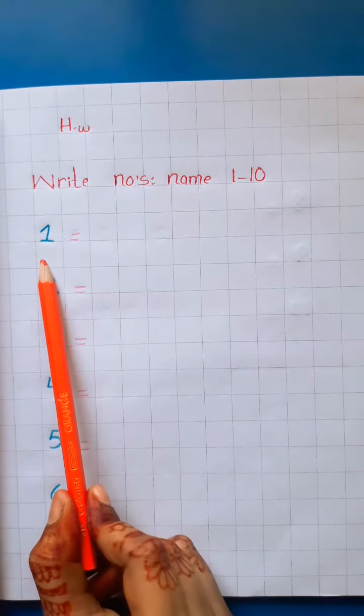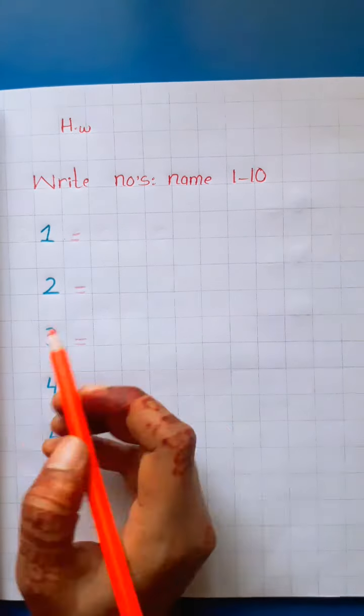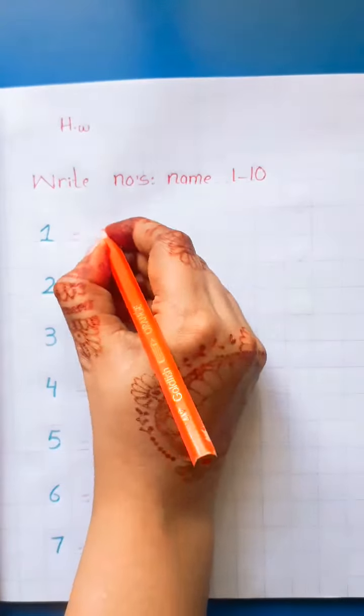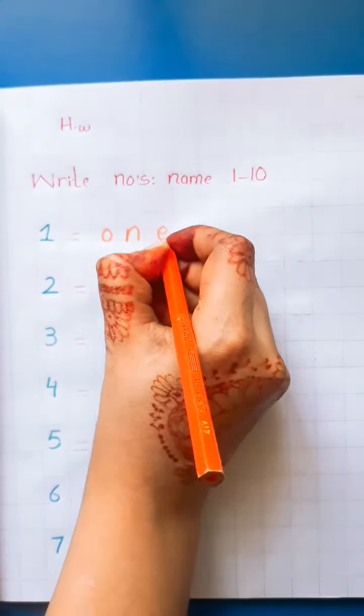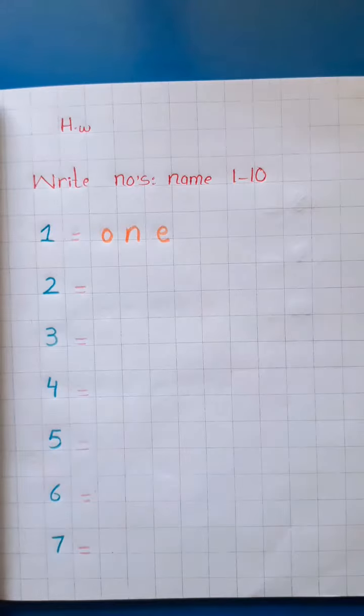Students, look here, which number is this? One. Now, we will write here the spell of one. O-N-E. One. O-N-E. One.